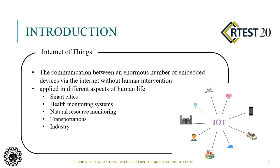The Internet of Things is composed of an enormous number of devices that communicate with each other through the Internet without human intervention. Today, the Internet of Things is applied in different aspects of human life, such as smart cities, monitoring systems, natural resource monitoring, transportation, and industry.